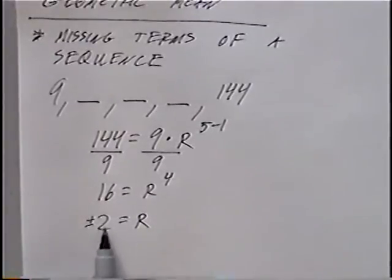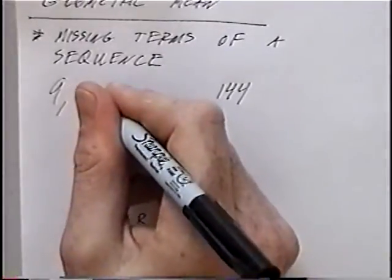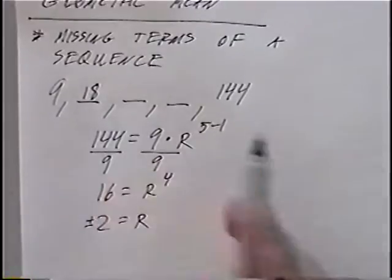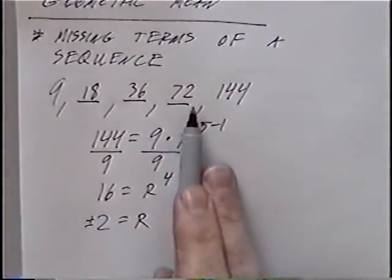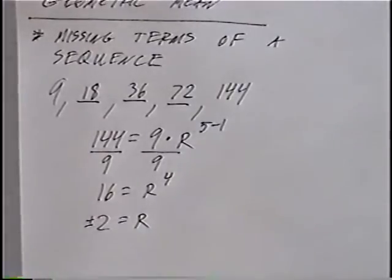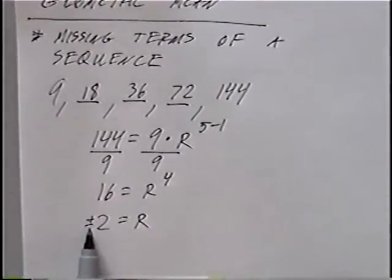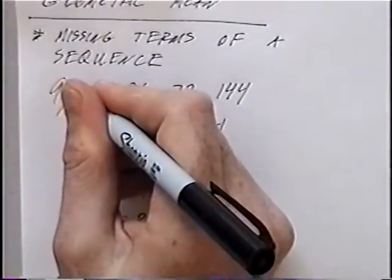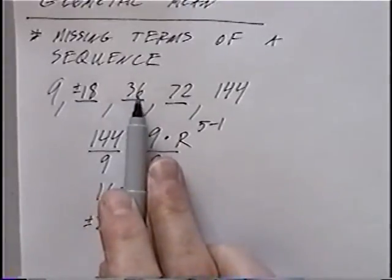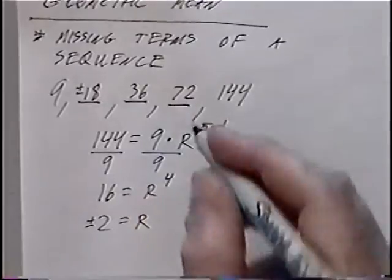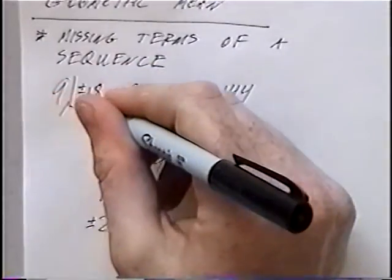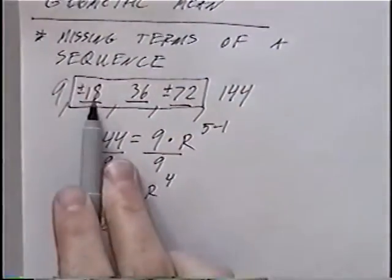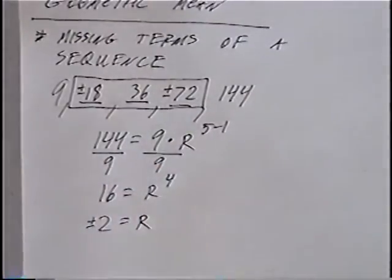If r is positive 2: 9 × 2 = 18, 18 × 2 = 36, 36 × 2 = 72, and 72 × 2 = 144. If r is negative 2, the signs alternate: 9, -18, 36, -72, 144. So the three missing numbers could be positive or negative 18, 36, and positive or negative 72.